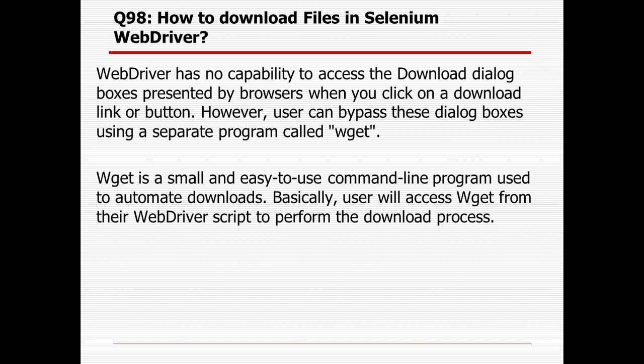How to download a file in Selenium WebDriver: Selenium WebDriver does not have any capability to access the download dialog boxes presented by the browser when you click a download link or button. However, the user can bypass this dialog box using a separate program called wget. wget is a small, easy-to-use command-line program used to automate downloads. The user accesses wget from their WebDriver script to perform the download process. Without integrating wget, Selenium WebDriver alone cannot download files.